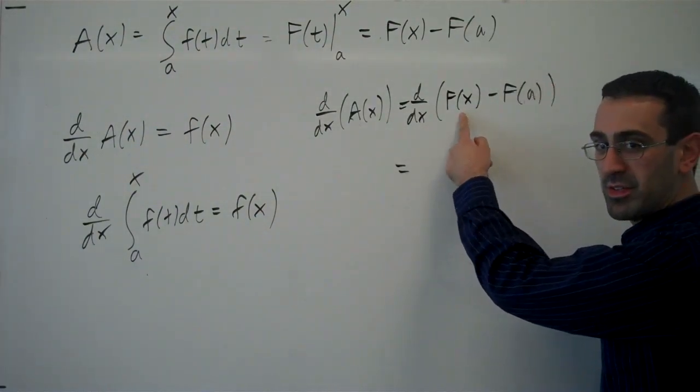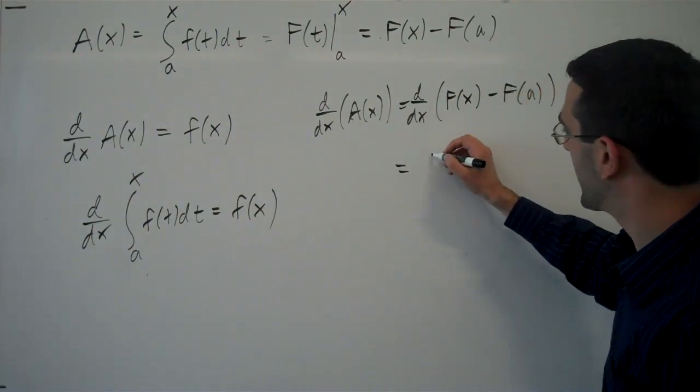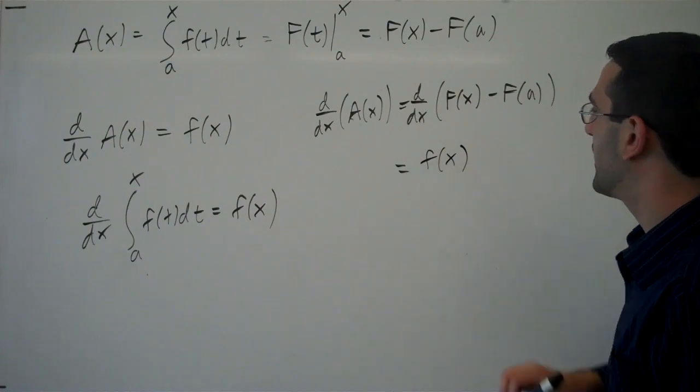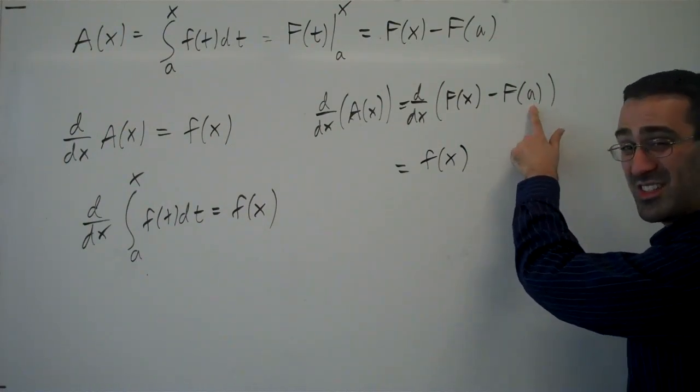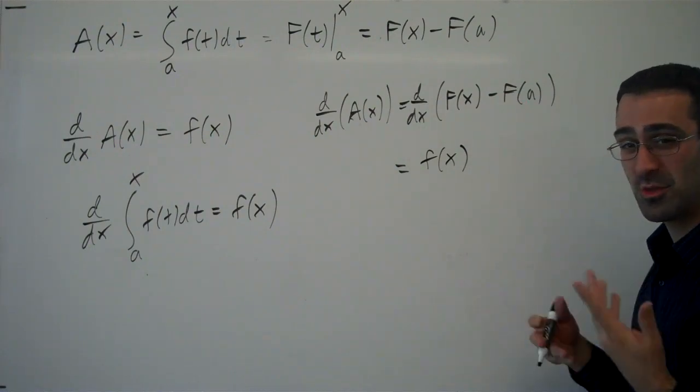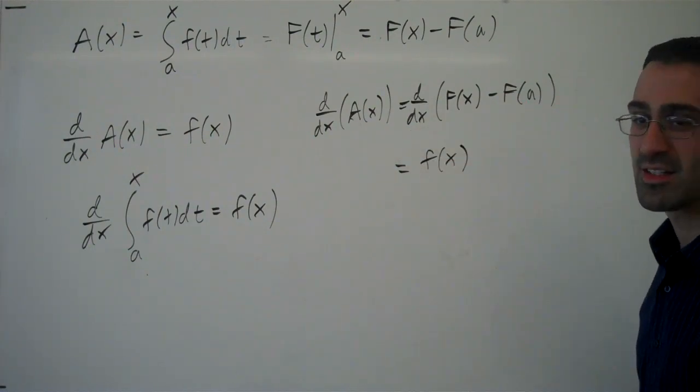Well, what is the derivative of big F? If it's an antiderivative, then the derivative of big F is just little f. What's the derivative of big F(a)? Well, a is a constant. We plug it into a function, we get a constant. The derivative of a constant is zero. We're just going to get back to that function.